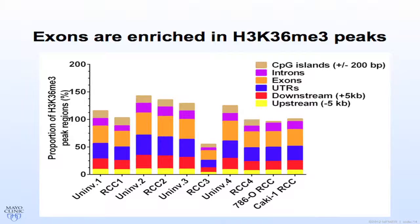To identify where these histone modifications are laid down in terms of gene features, we looked at CpG islands, introns, exons, untranslated regions, and downstream and upstream gene fragments. The majority of exons are enriched in histone 3-lysine 36 peaks, suggesting these histone modifications are enriched at exons. As a control, we also looked at 786-O and CAKI-1 cell lines.